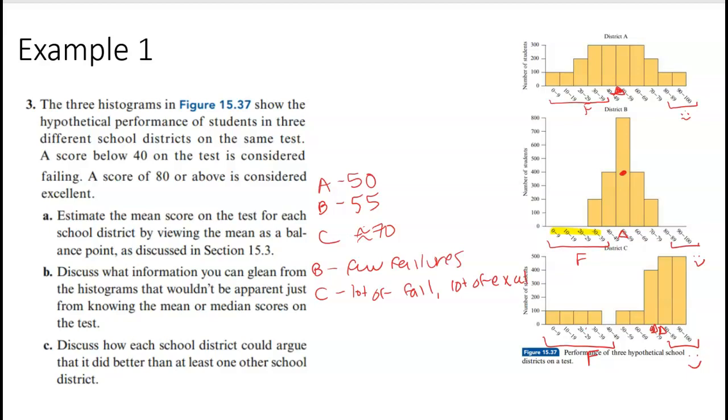But what about how each one could argue that it did better than the other? What would A say? A might say more students passed, right? They don't have a lot of failures here. They might say more students passed. They have a good chunk over here that passed. What might B say? Well, B might say we have almost no failures, right? Almost no fails.